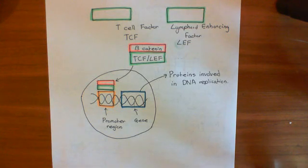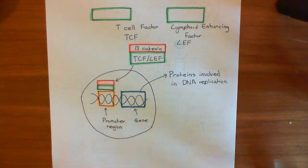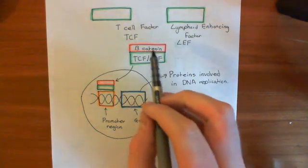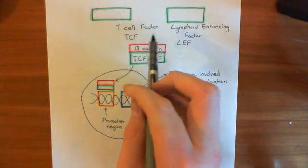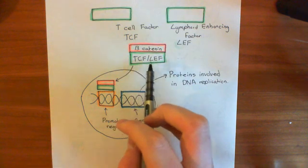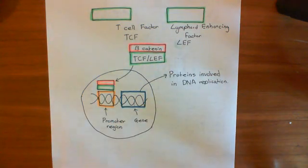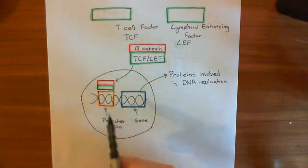Welcome to this next video on the Wnt-beta-catenin pathway and familial adenomatous polyposis. So far, what we've seen is that activating the Wnt pathway leads to elevations in the level of beta-catenin in the cytoplasm of cells. That elevation is transferred to an elevation in beta-catenin in the nucleus, where beta-catenin associates with two other transcription factors, namely T-cell factors or lymphoid-enhancing factors, abbreviated as TCF/LEF. That complex then binds promoter regions of certain genes and alters their expression.